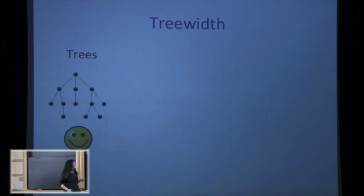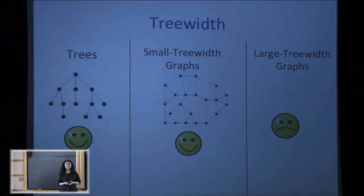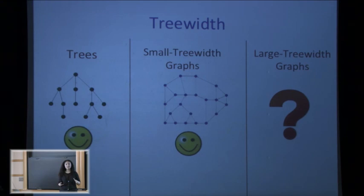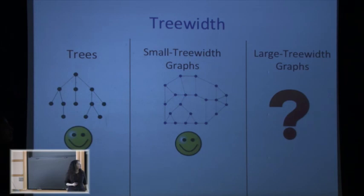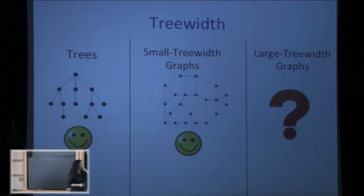Going back to the big picture: trees are very good for us, and small tree-width graphs are still pretty good. But if a graph has large tree-width, this tree decomposition doesn't help us. We want some generic hammer to handle graphs with large tree-width. The grid minor theorem is exactly this hammer: it tells us that if the tree-width of G is large, then G contains a large grid minor.